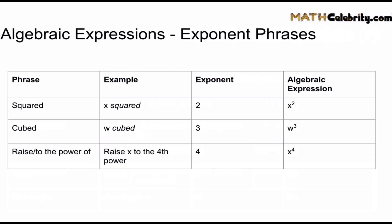So the first one is x squared. Squared is the second power. So you just do the superscript 2 to denote that we're raising x to the second power. Cubed is another way to say to the third power. So w cubed we raise to the power of 3.